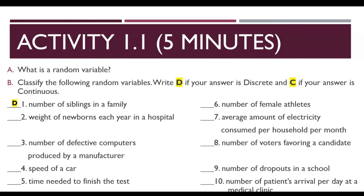Number 2: Weight of newborns each year in a hospital. You cannot count it, but you can measure weight, therefore it is C — continuous. Number 3: Number of defective computers produced by a manufacturer. You can count it, therefore it is D — discrete.